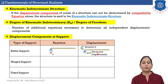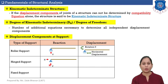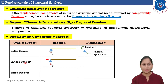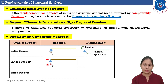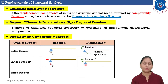In the case of hinge support, it always offers two reactions — one in the horizontal direction and one in the vertical direction. Therefore, horizontal displacement and vertical displacement are not possible at a hinge support. So at hinge support only rotation is possible.